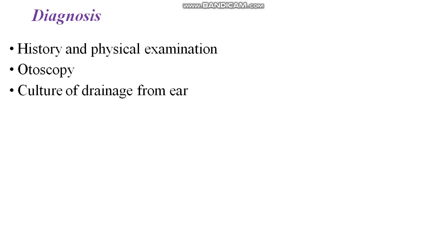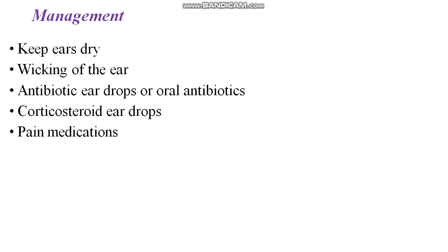Otoscopy can be done in order to see the inner portion of the ear canal. If there is drainage from the ear, in order to find out the organism responsible for the infection, you have to do a culture of the drainage from the ear so that antibiotics can be adequately started. These are the diagnostic measures: a detailed history and physical examination, otoscopy, and culture of drainage from the ear.